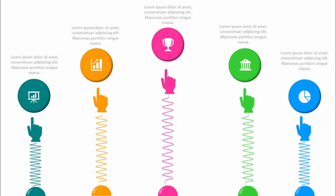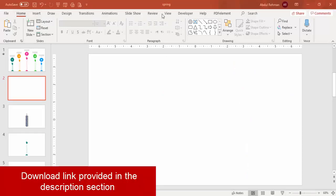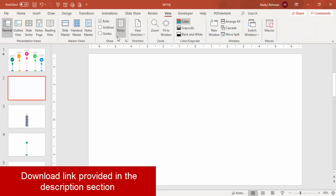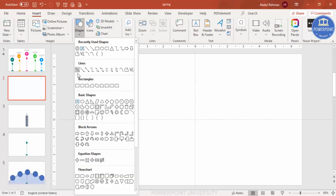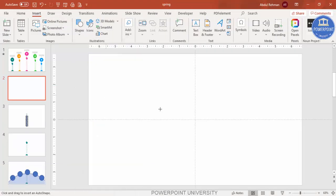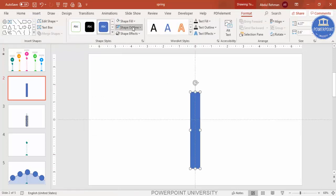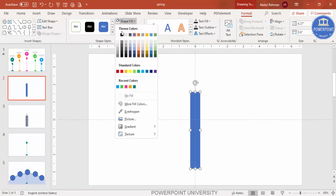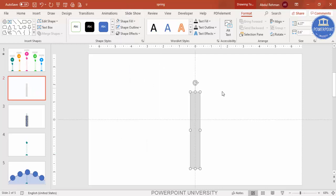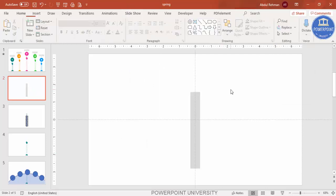In PowerPoint, add a new slide, go to View and enable the guides. Then go to Insert > Shapes, select a rectangle, and draw a small rectangle in the center — roughly this size. Set the shape outline to no outline, give it a light fill color, and make sure it is aligned center.